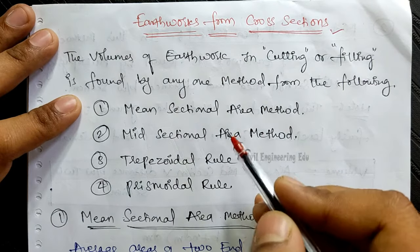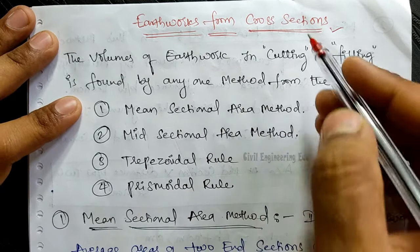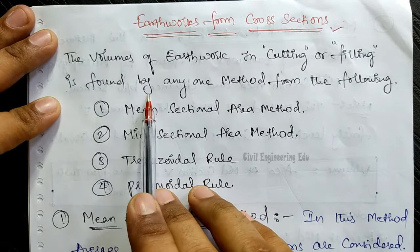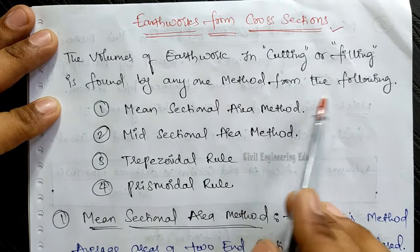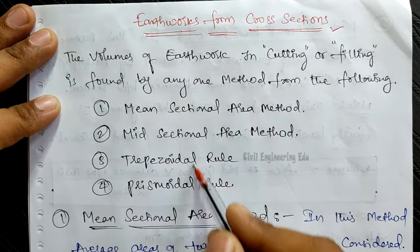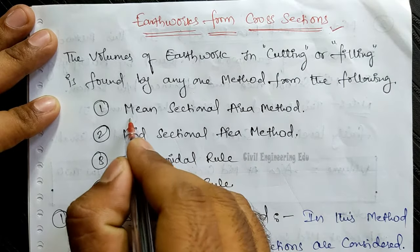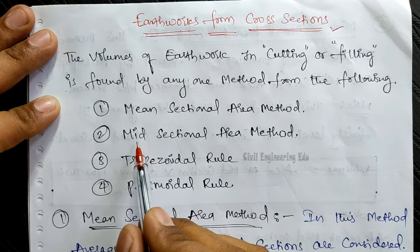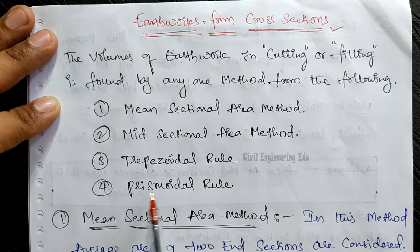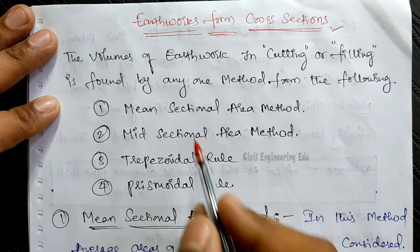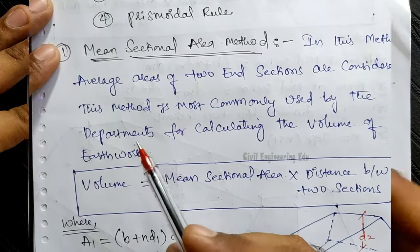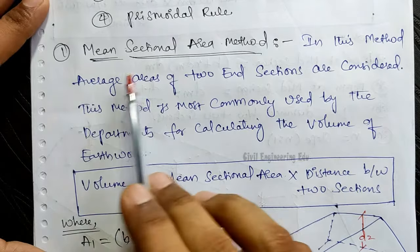The first method we are going to discuss here is from cross sections. The volumes of earthwork in cutting or filling can be found by any one of four different methods within cross sections: first is mean sectional area method, second is mid-sectional area method, third is trapezoidal rule, and fourth is prismoidal rule. We will see the first one — mean sectional area method.